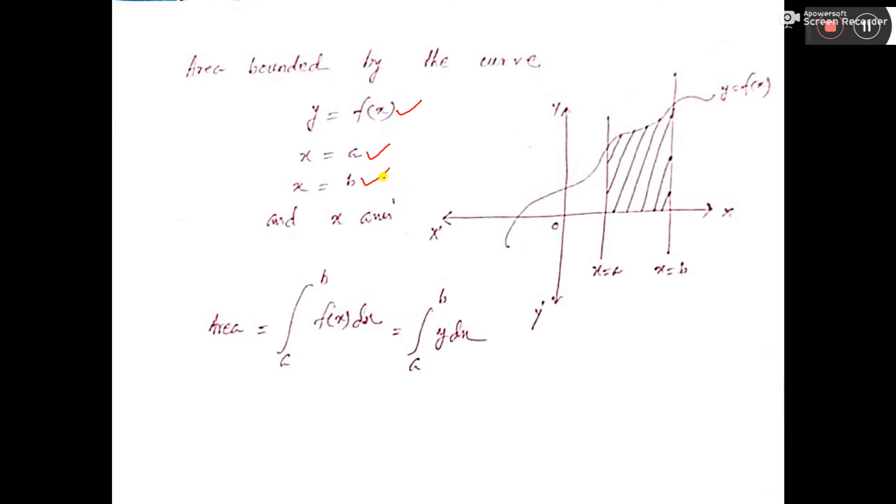Here also I have written the function, the line, the line, and x-axis. So one, two, three and this curve. So these four lines, two are straight lines, three are straight lines and one curve line. So area bounded by these four lines.